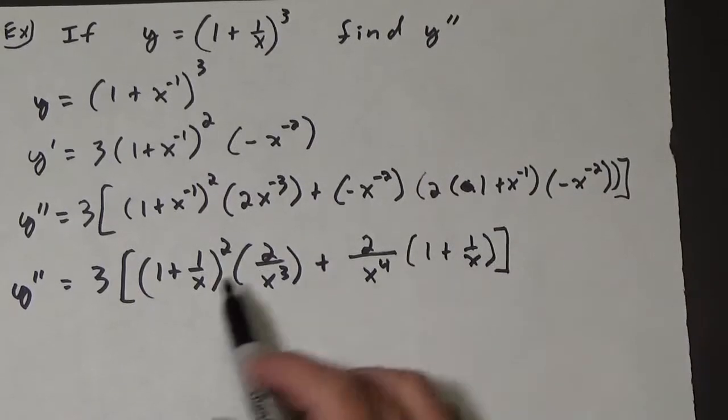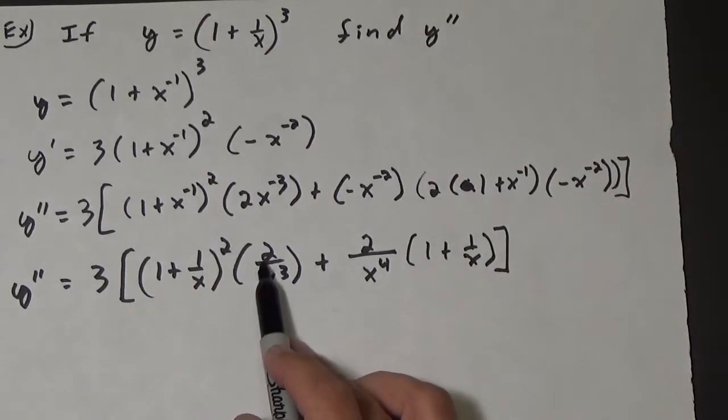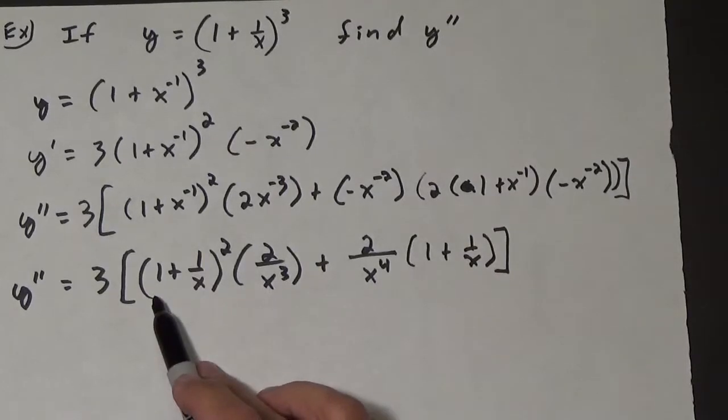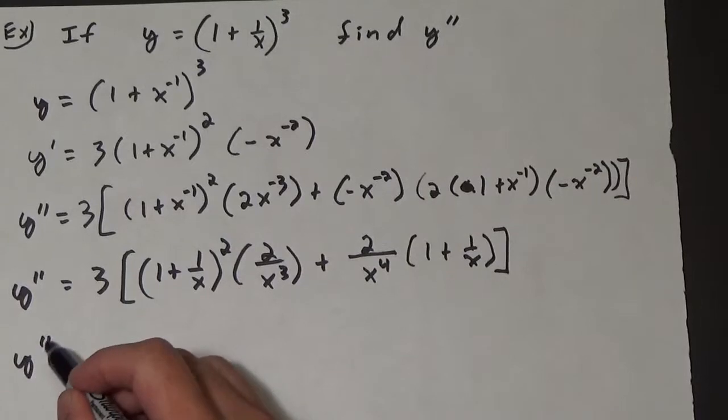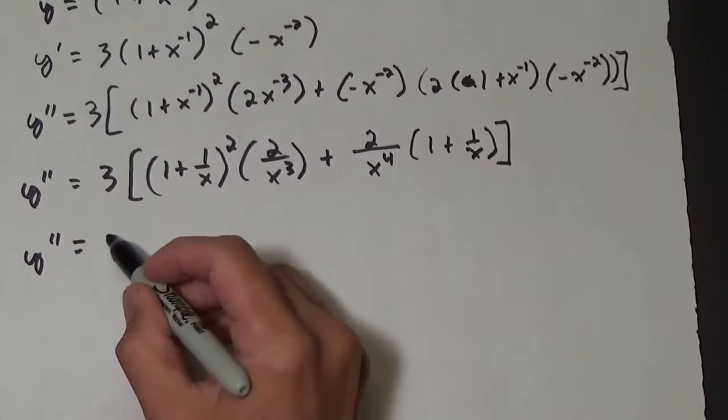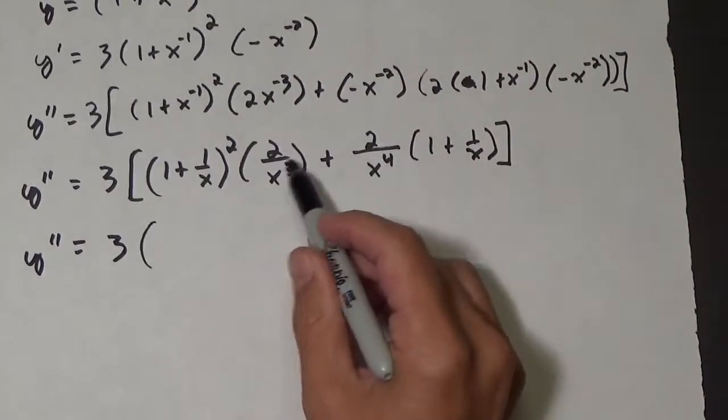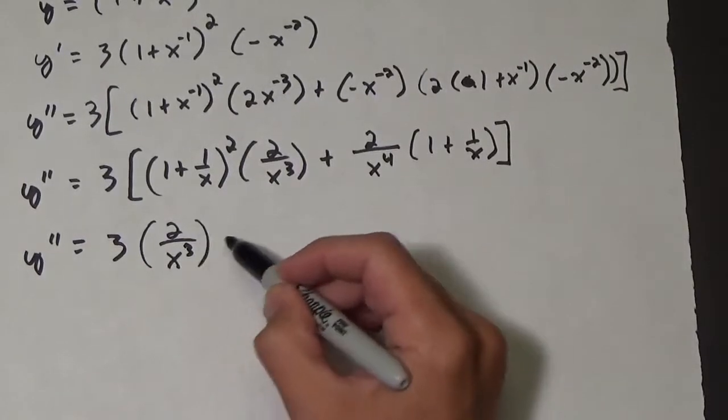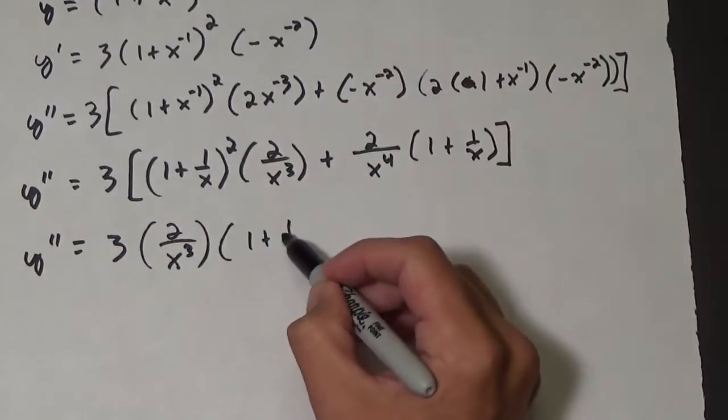And we can factor out a 2, we can factor out an x cubed, and we can factor out a 1 plus 1 over x. So let's do that. Y double prime is going to equal 3, and so we have 2 over x cubed times 1 plus 1 over x.